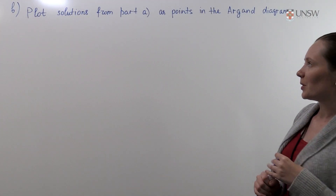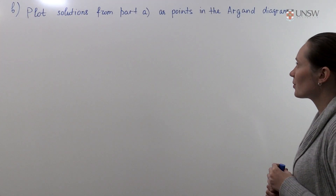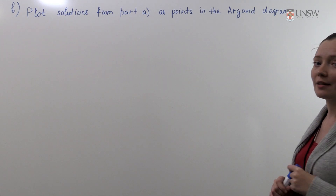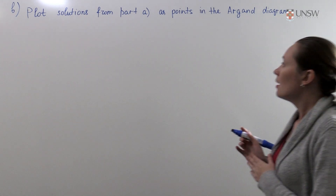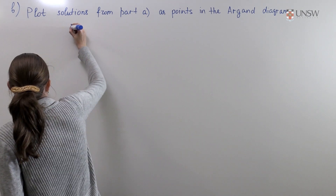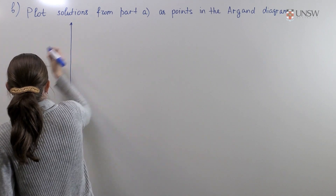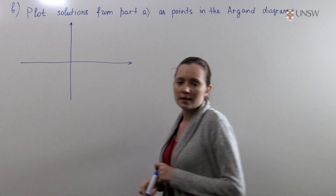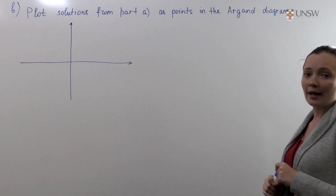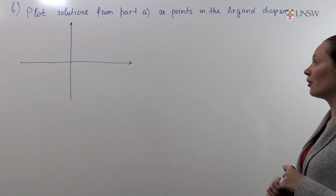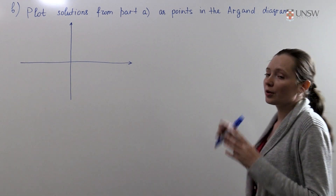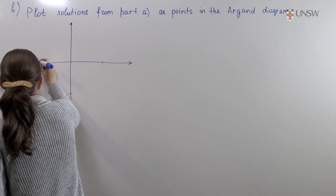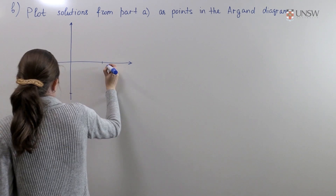For part b we need to plot the solutions from part a as points in the Argand diagram. Since all solutions from part a have modulus 1, therefore they all will be on the unit circle. Let's draw the unit circle.